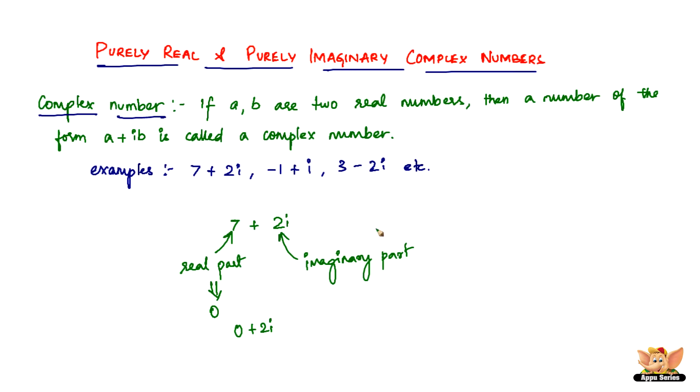Now, in another case, if the imaginary part is 0, then it'll be 7 plus 0i. We've got only 7 here, right? 0i is nothing but 0 times i is 0. So 7 is only the real part there. So this 7 plus 0i is called a purely real complex number, all right?